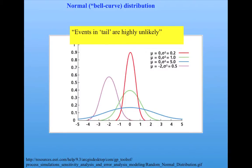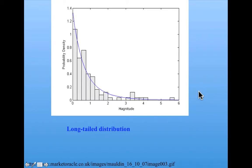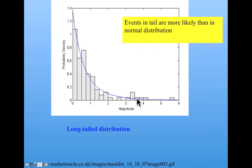Now, I want to talk about the implications of the long tail distribution for thinking about risk. It's been traditional to model risk using normal distributions, or bell curve distributions. But all of them have the feature that events in the tail of the distribution are highly unlikely. However, if you look at a long tail distribution, it turns out that events in the tail are more likely than in a normal distribution — sometimes much more likely.